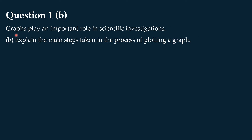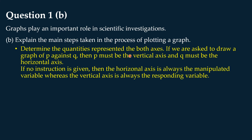Question 1b: Explain the main steps in the process of plotting a graph. The very first step is to determine the quantity represented by both axes. If we are asked to draw a graph of p against q, then p must be the vertical axis and q must be the horizontal axis. If no instruction is given, the horizontal axis is always the manipulated variable, and the vertical axis is always the responding variable.